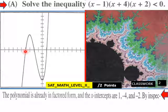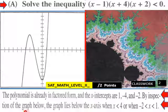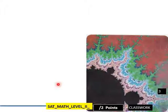By inspection of the graph, the graph lies below the x-axis when x < -4 or when -2 < x < 1. So looking at that, when x is less than negative 4, it is below the x-axis, as well as here between 1 and negative 2. It's below the x-axis or less than zero.